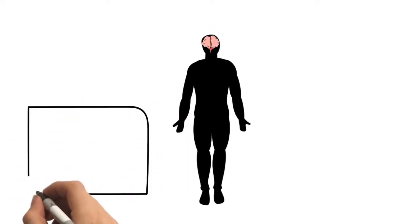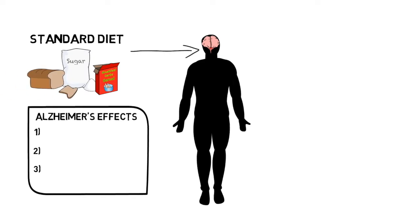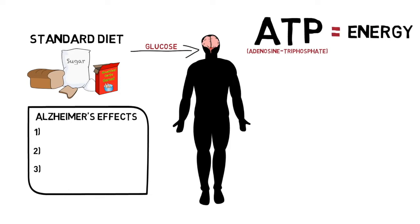To describe how ketones have this incredible impact on the brain for Alzheimer's patients, we first have to understand the way Alzheimer's affects the brain negatively. With a standard Western diet, glucose is the primary fuel source for the brain. The brain and other organs in the body use glucose from nutritional intake of carbohydrates to produce ATP, or adenosine triphosphate, which is the energy source for all processes in the body.